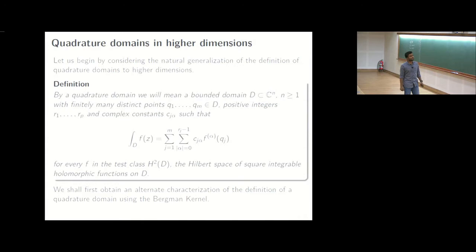So again we will only deal with bounded domains in CN. We will say that a domain D in CN is a quadrature domain if it satisfies a quadrature identity. And a quadrature identity is what one would expect. So for every f in the Bergman space which is L2 holomorphic functions, integral of f is basically a finite sum of or rather finite linear combination of f alpha of qj where the cj alpha, the derivative and qj are not dependent on f.